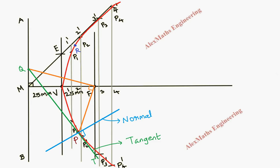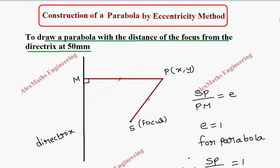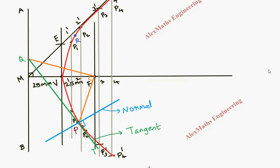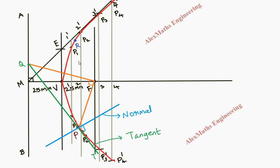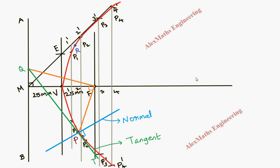Thus we have completed the construction of the parabola by the eccentricity method. As per the question, we drew the parabola with the distance of the focus from the directrix at 50 mm. We marked the focus F at 50 mm from the directrix, the vertex V at 25 mm, constructed the perpendicular lines, cut arcs using the eccentricity procedure, joined all the points by a smooth curve to get the parabola, and also discussed drawing the tangent at any particular point on the parabola.